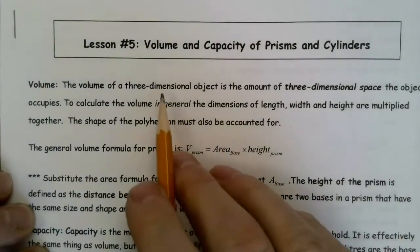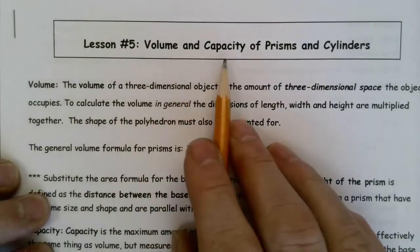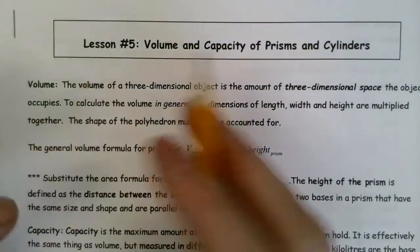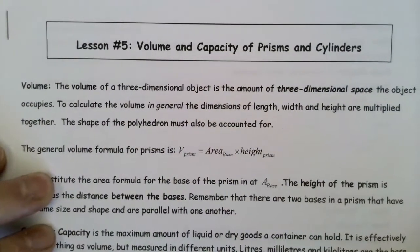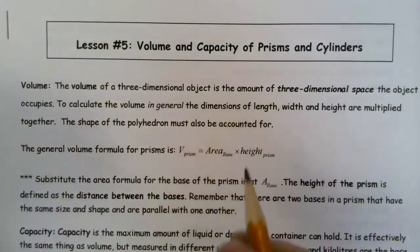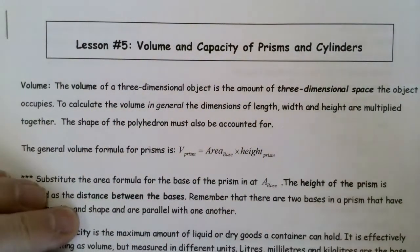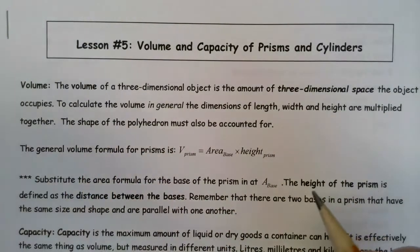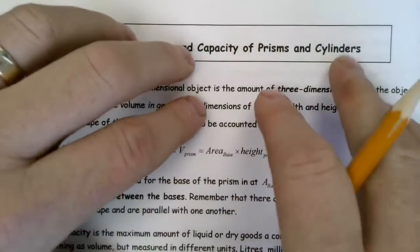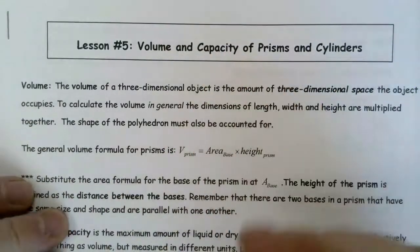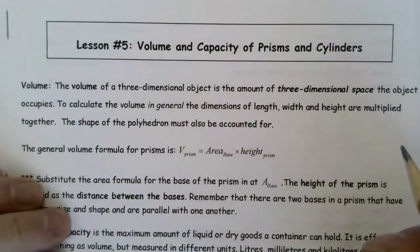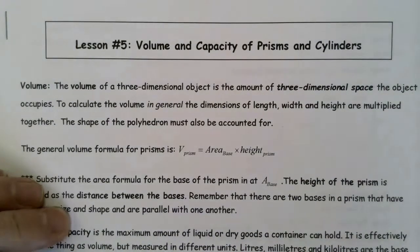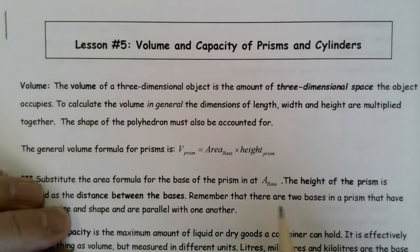In this lesson, we're going to take a look at volume and the capacity of prisms and cylinders. Volume is a measure of the amount of three-dimensional space that an object takes up. Usually, we need length, width, and height, and we multiply those together to get the volume of a shape. However, we're not talking about just regular prisms anymore — these could be more complicated shapes.